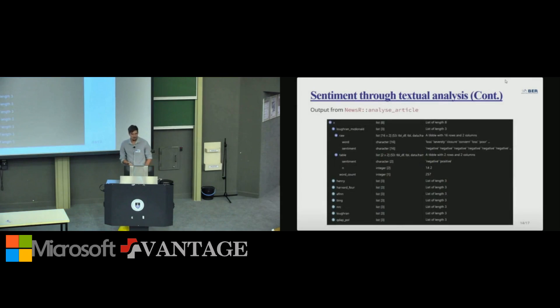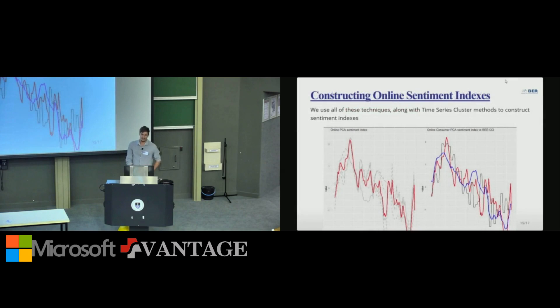So essentially, this is sort of the construct of how I'm using analyze article. You can see I get the words, the sentiments, and the nice counts. Why? Because we construct an index as a normalized sum of those percentages, right? So I'm following the same methodology as the BER does, but I'm saying that an article is a small survey. So essentially, we get to this, which is our end goal, to construct sentiments. We've been quite highly successful.